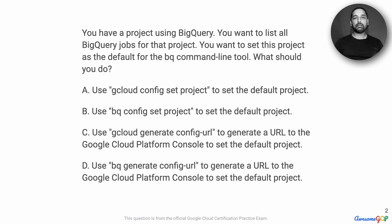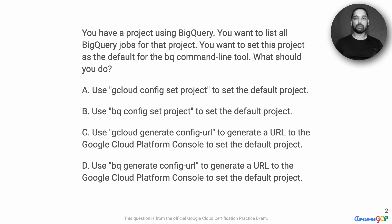A. Use gcloud config set project to set the default project. B. Use bq config set project to set the default project. C. Use gcloud generate config URL to generate a URL to the Google Cloud Platform console to set the default project. Or D. Use bq generate config URL to generate a URL to the Google Cloud Platform console to set the default project.